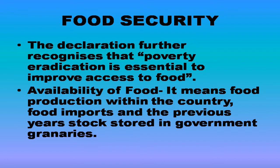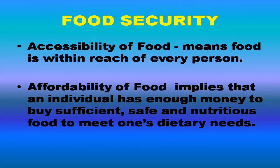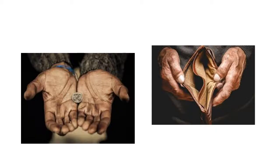Food security has the following dimensions. Availability of food means food production within the country, food imports and the previous year's stock stored in government granaries. Accessibility of food means food is within reach of every person, or a person is able to get sufficient food for his survival.